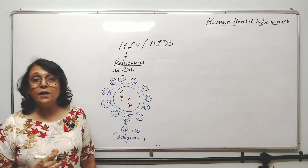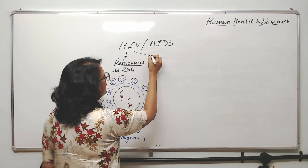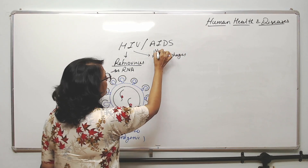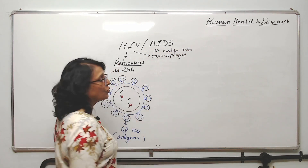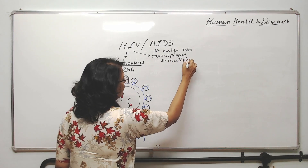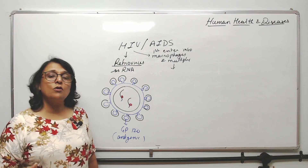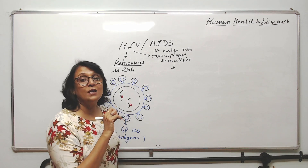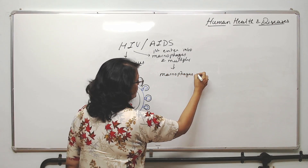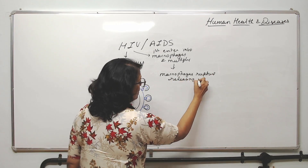HIV viruses first enter into macrophages, where they multiply. Eventually the macrophages rupture, releasing thousands of viruses. That is why macrophages are known as the factories of HIV.